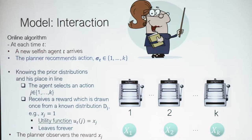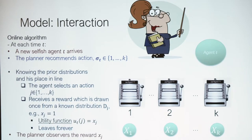In our case, there is no single planner that can select whatever action it wants. Instead, there is a planner that can recommend actions and agents can choose whether or not to follow. In every time step T, a new selfish agent T arrives. The agent is selfish in that he won't follow a recommendation that won't benefit him — the Bayesian incentive compatible constraint.